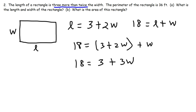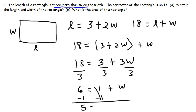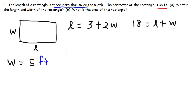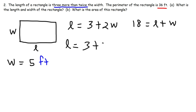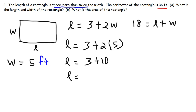All these numbers are divisible by 3, so dividing everything by 3: 18 divided by 3 is 6, 3 divided by 3 is 1, and 3W divided by 3 is W. Next, subtract both sides by 1: 6 minus 1 is 5, so W equals 5 feet — the width of the rectangle. Now plugging W into L equals 3 plus 2W: 2 times 5 is 10, and 10 plus 3 is 13. The length of the rectangle is 13 feet.